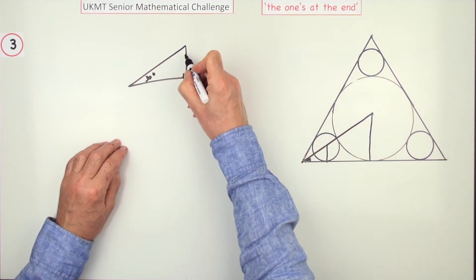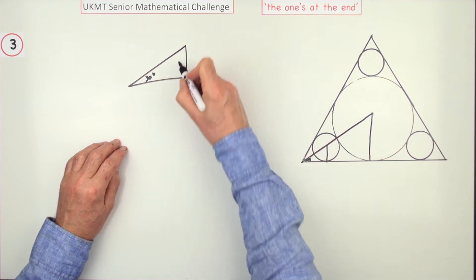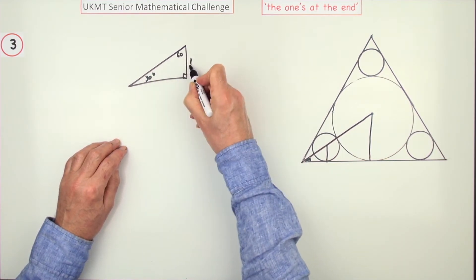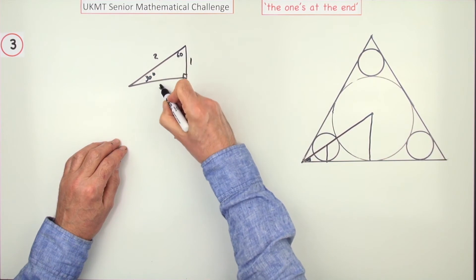And you should know or learn the ratio of sides for a 30-60 triangle, which is one, obviously for the smallest one, two for the largest, root three.